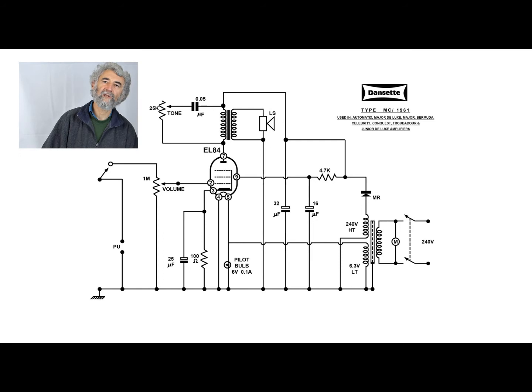Danset MC 1961. Well, they moved on a bit from some of the circuits we've looked at. This is an AC-only unit, motor across the mains, double-pole mains switching at long last.